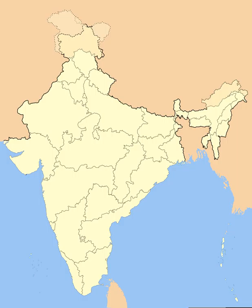The Indian subcontinent has been ruled by many different ethnic groups throughout its history, each instituting their own policies of administrative division in the region. During the British Raj, the original administrative structure was mostly kept, and India was divided into provinces directly governed by the British and princely states nominally controlled by a local prince or raja loyal to the British Empire, which held de facto sovereignty over the princely states.